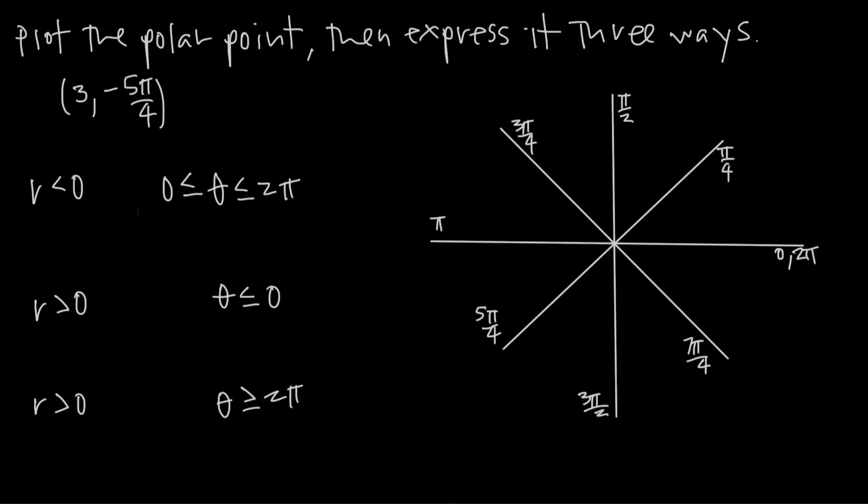In this video we're talking about how to plot a polar point and then express it in a few different ways. The point that we've been given is 3, negative 5 pi over 4.